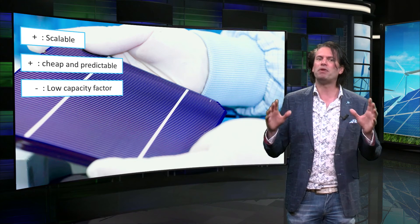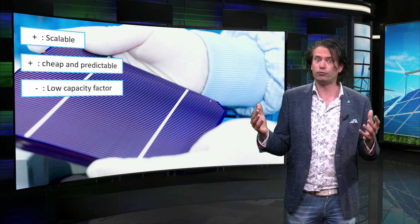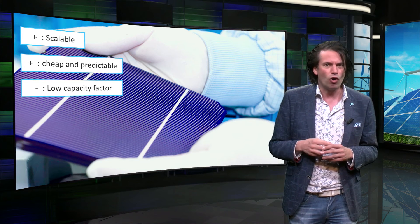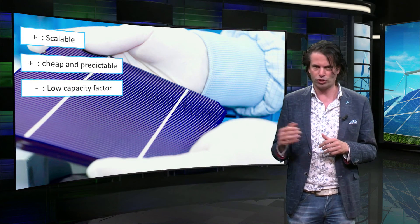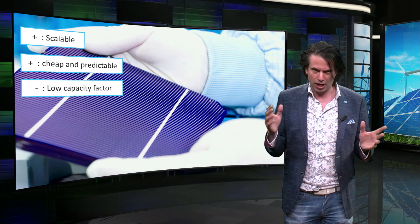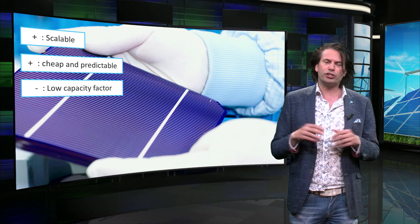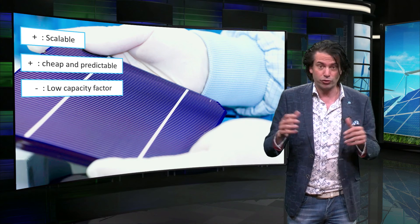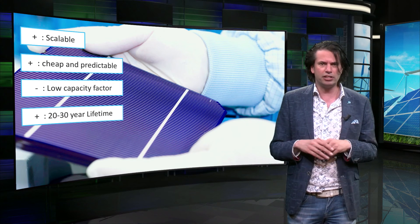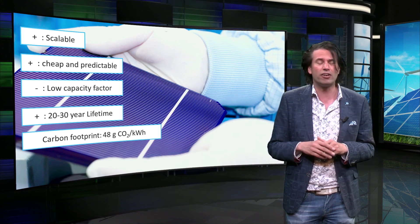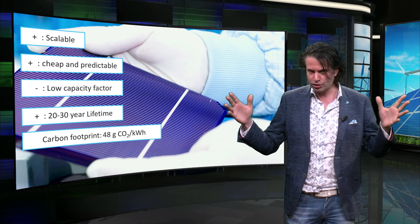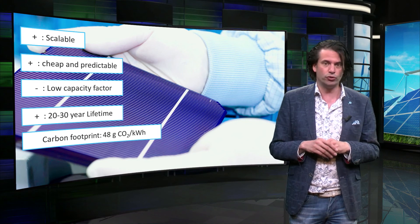Unfortunately, PV technology also has a carbon footprint. This is caused by the fairly energy-intensive processing of the silicon semiconductor material used for solar cells. According to the Intergovernmental Panel on Climate Change, the IPCC, research from 2014 showed that the average carbon footprint of large-scale PV installations is about 48 grams of CO2 per kilowatt hour of generated energy, though this may vary depending on the source.